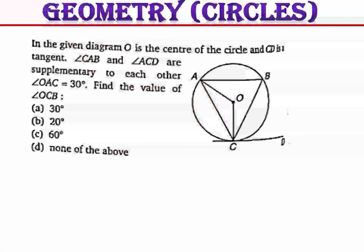First question: in the given diagram, O is the center of the circle, CD is a tangent, and angle CAB and angle ACD are supplementary to each other. Angle OAC is given as 30 degrees, which means angle OCA will also be 30 degrees, because OA equals OC, both being radii of the circle.